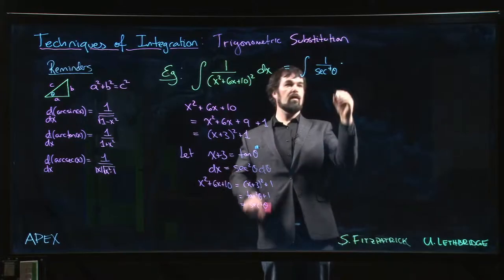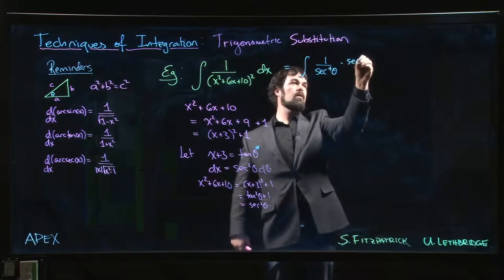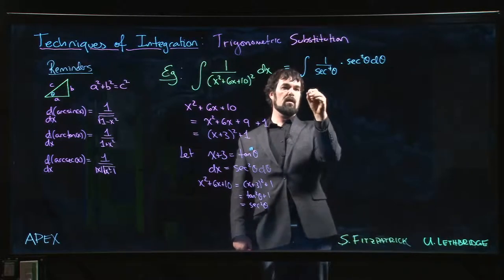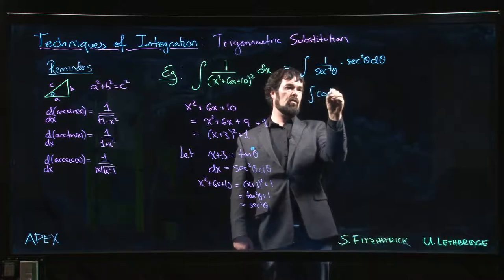dx is secant squared theta d theta, so that's 1 over secant squared, that's just cos squared.